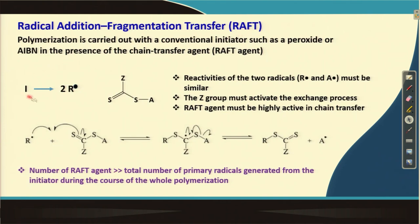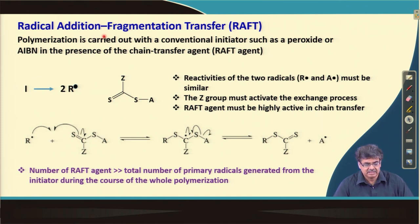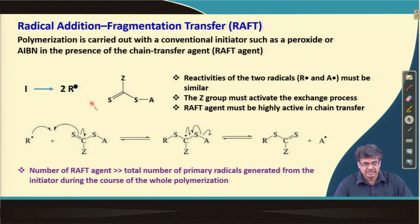In this lecture, this is a reversible transfer by which we can actually achieve radical polymerization in a controlled fashion. In this case, the radicals are generated in a conventional initiator fashion like peroxides and AIBN, and in the presence of a chain transfer agent.